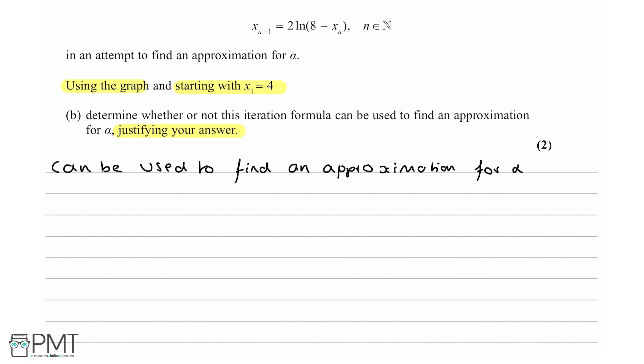We can write something along the lines of: because the cobweb spirals inwards. This way you've covered all your bases. You've used your graph and you're using what you've learned from that graph to formulate your final justified answer.